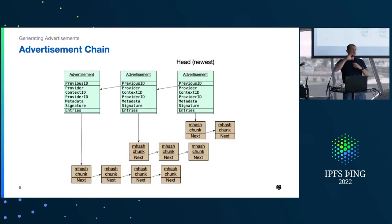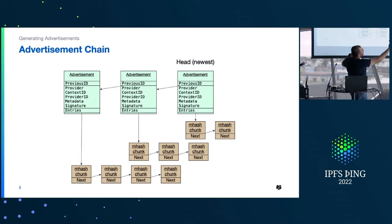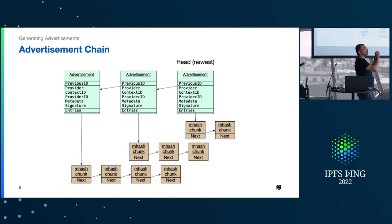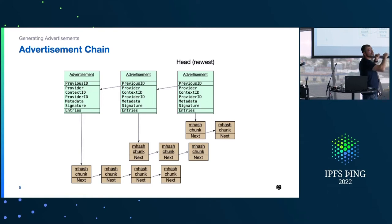Here is a picture of an advertisement chain. An advertisement has fields I mentioned earlier and a link to the previous advertisement. That link may or may not be present — its absence means we've reached the end of the chain. It also has links to entries, which is the actual structure containing the list of multihashes we're advertising as a content provider. Entries themselves can form a chain.